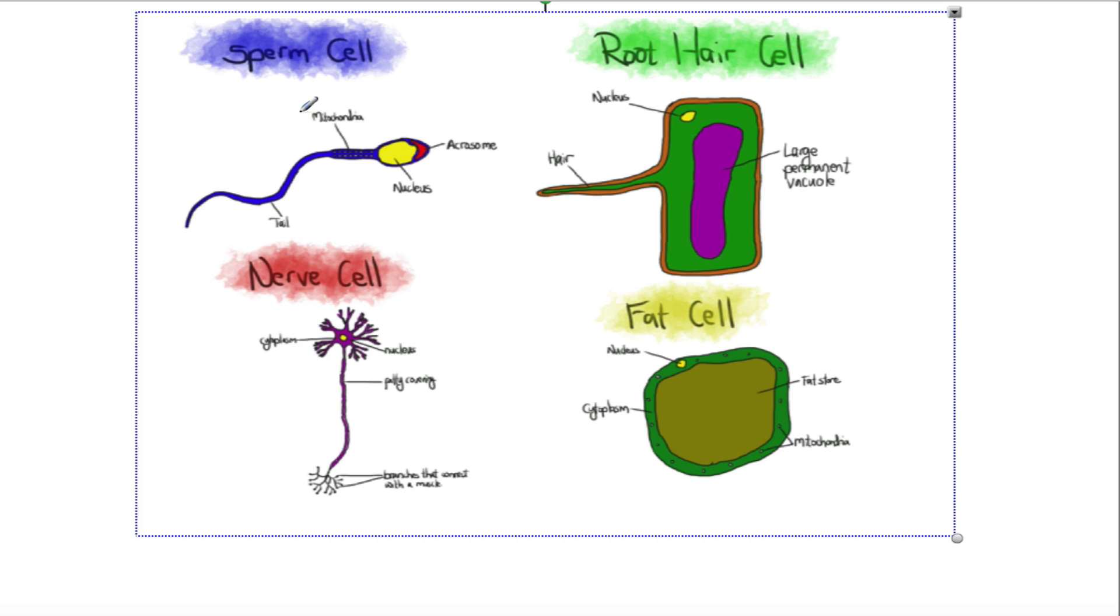You've got a sperm cell which has this bit at the top, a cap called an acrosome containing enzymes which help it digest its way into an egg. It's got lots of mitochondria to provide energy through respiration to enable the tail to move for swimming. The root hair cell—look how its shape differs. It's got a much bigger surface area as a result of that structure, meaning a bigger area to absorb the water and nutrients it needs.